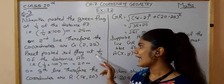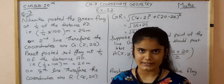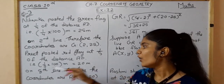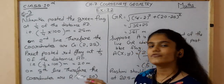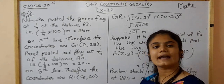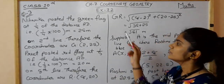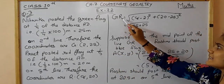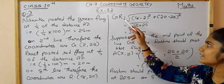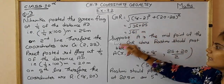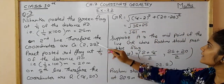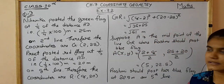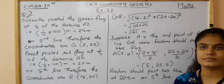Preet posts a red flag at 1/5 of the distance AD: 1/5 of 100 meters = 20 meters on the 9th line. So the coordinates for the red flag are (9, 20). The distance between the two flags GR, using the distance formula, is the square root of (9-2)² + (20-25)², which equals the square root of 61 meters.